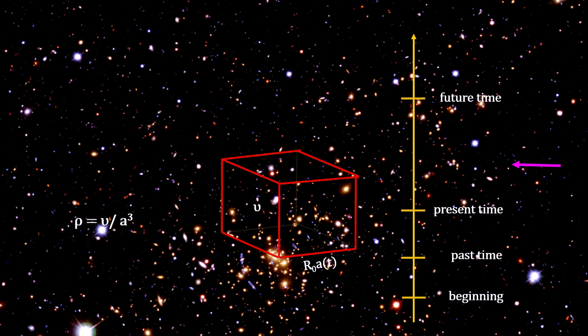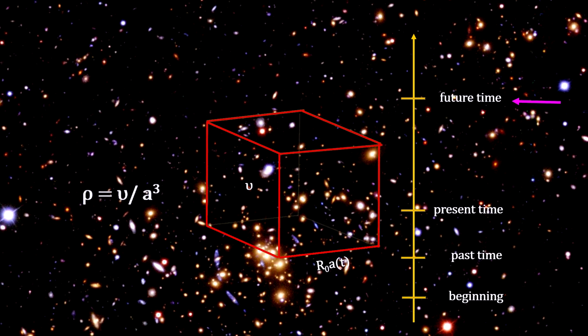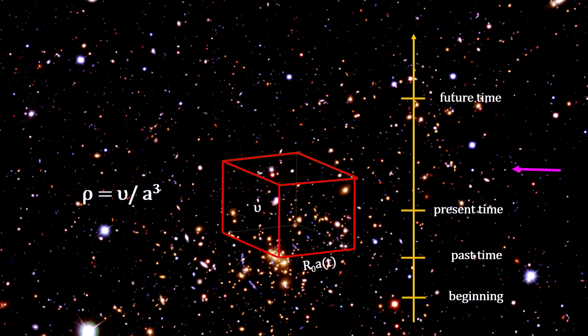But the matter density goes down when the scale factor increases, and it goes up when the scale factor decreases.